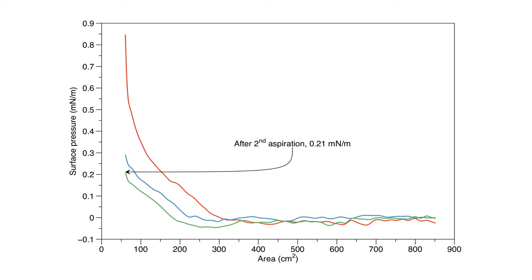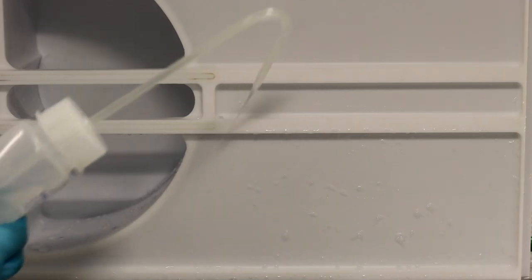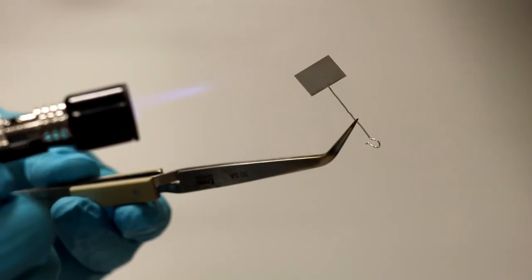If you are unable to satisfactorily reduce the change in surface pressure over the course of 3 to 5 compression and aspiration sequences, I'd recommend revisiting the trough, barrier and plate cleaning methods previously outlined.